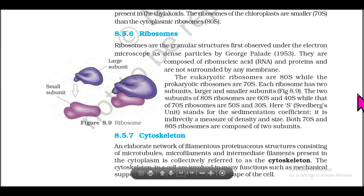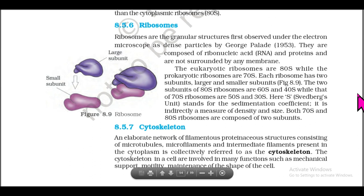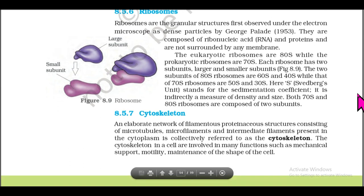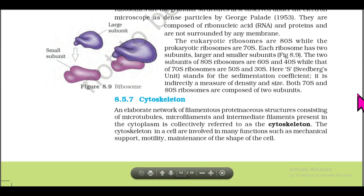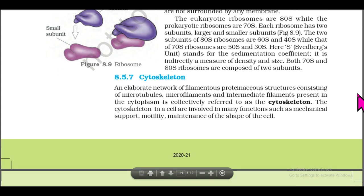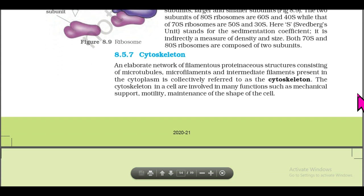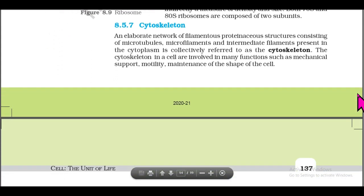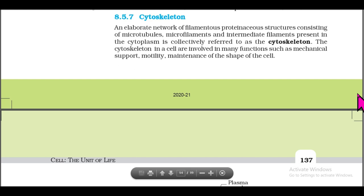Eukaryotic ribosomes are 80S while prokaryotic ribosomes are 70S. Each ribosome has two subunits — a larger and a smaller subunit. The two subunits of 80S ribosomes are 60S and 40S, while those of 70S ribosomes are 50S and 30S. Here, 'S' stands for Svedberg's unit, which is a measure of sedimentation coefficient, indirectly a measure of density and size. Both 70S and 80S ribosomes are composed of two subunits.